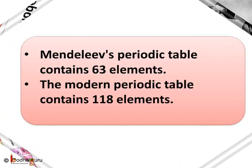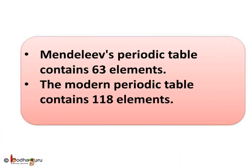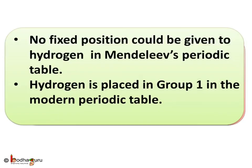Also, Mendeleev's periodic table contains 63 elements only, whereas the modern periodic table contains 118 elements as of now.